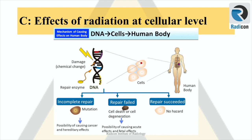DNA damage is not only caused by radiation, but also by carcinogens in food, tobacco, chemical substances in the environment, and active oxygen. Damage due to low dose exposures is significantly less compared to metabolic DNA damage. However, radiation provides energy locally and causes complicated damage affecting multiple parts of the DNA.